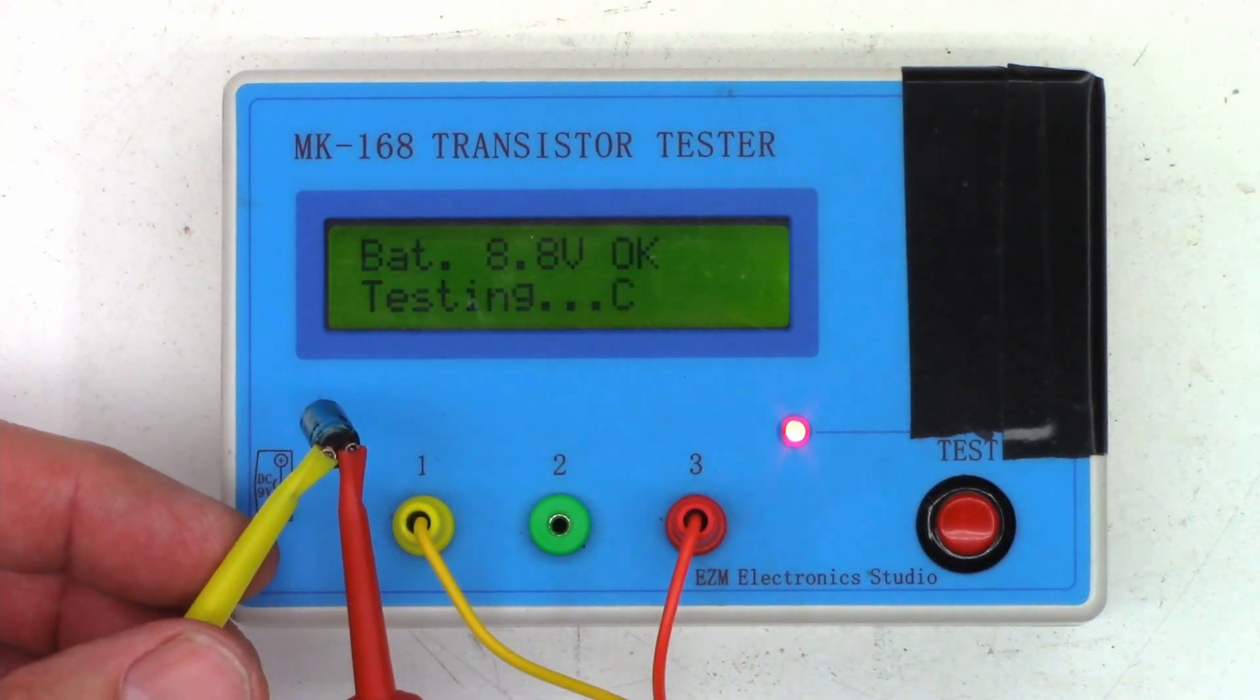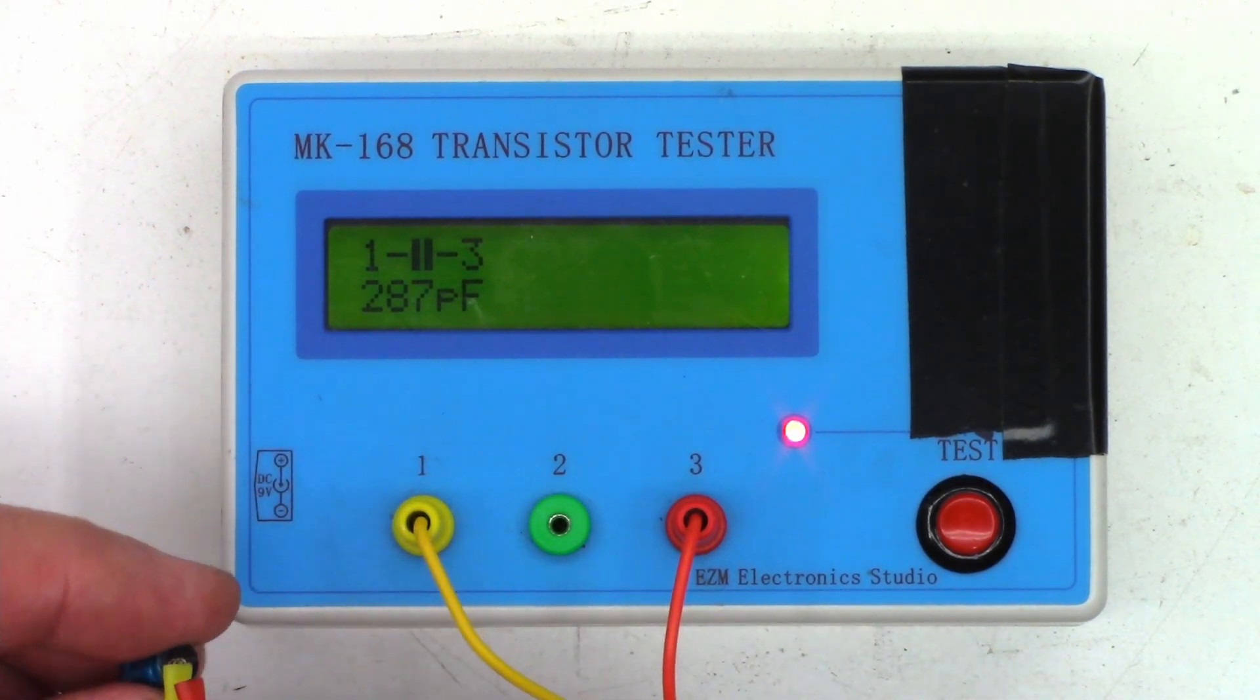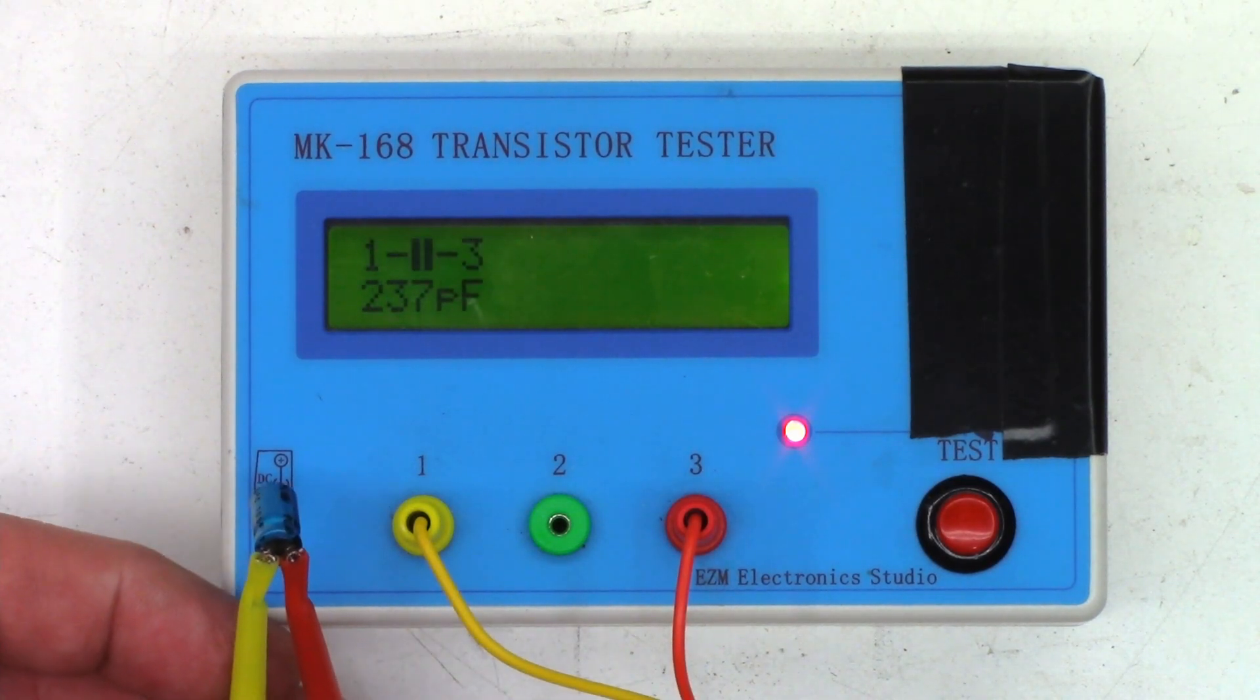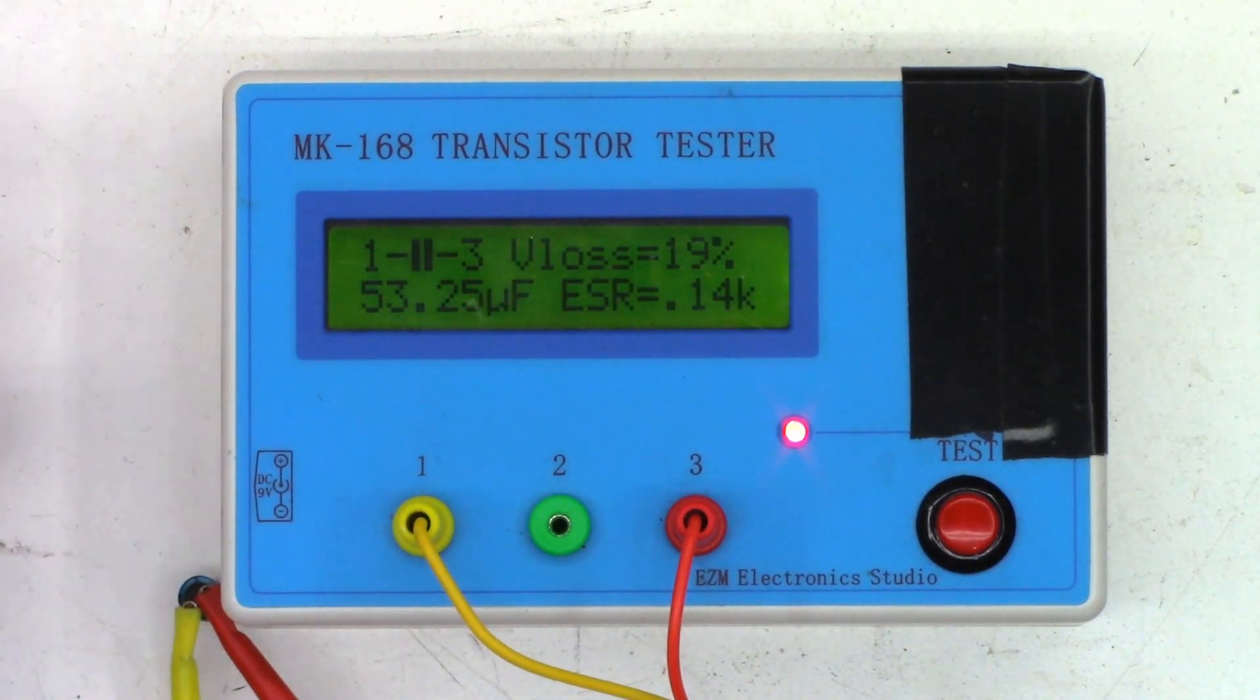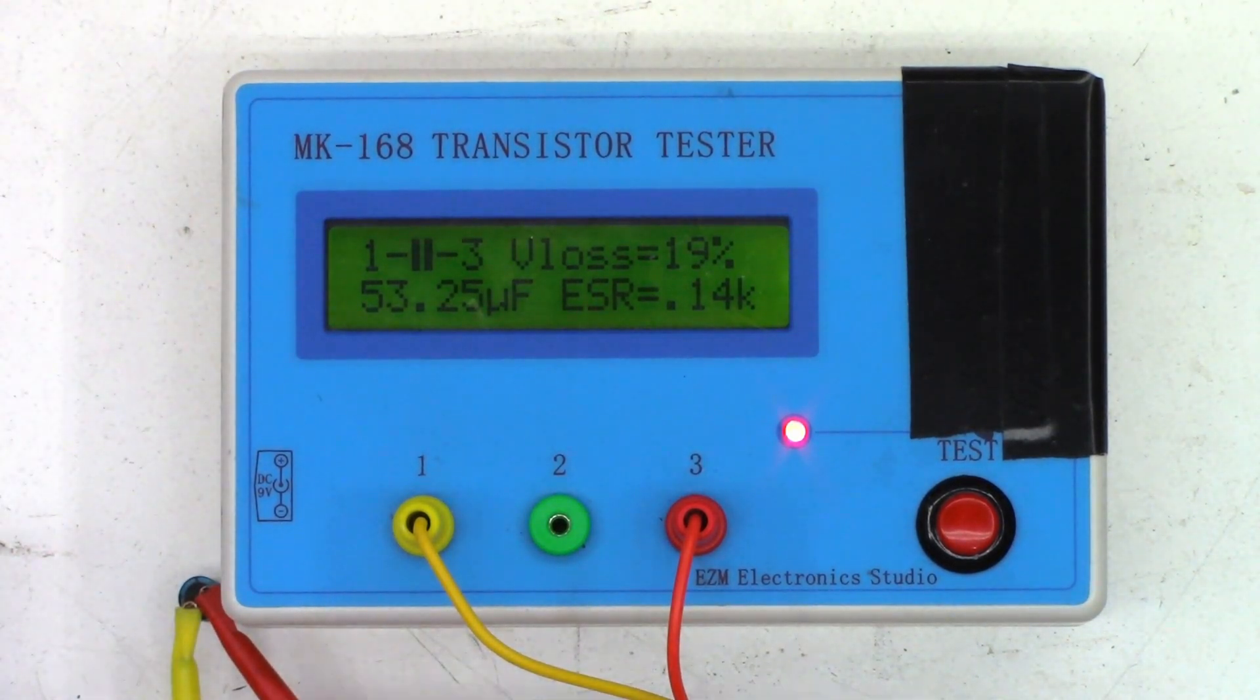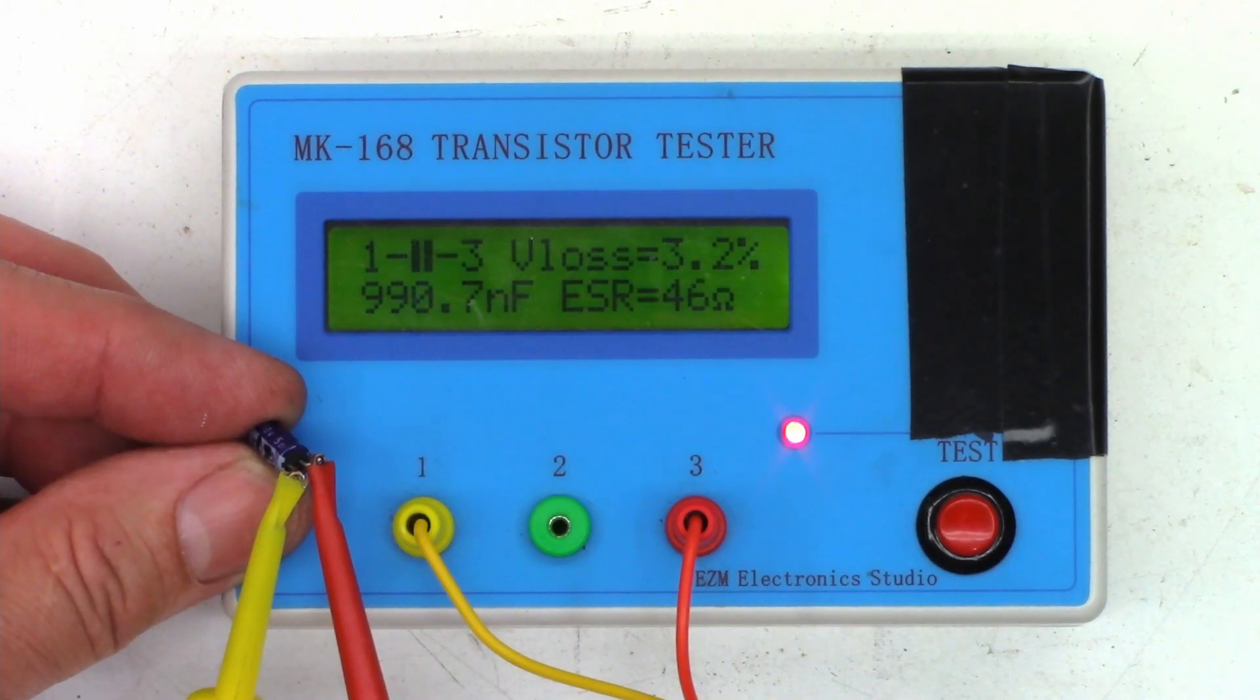All right, now on to the Nichicon that neither other tester would even test. Wow, 123 microfarads, ESR of 0.14K—140 ohms—and a V loss of 34 percent. On to the second Nichicon that I could not test on the other tester: 287 picofarad. That's all it will show me. It has definitely flown south for the winter. On to the next untestable Nichicon: 237 picofarad. And the last untestable Nichicon: 53 microfarads, ESR of 0.14K once again, and a V loss of 14, absolutely terrible—140 ohm ESR, worthless.